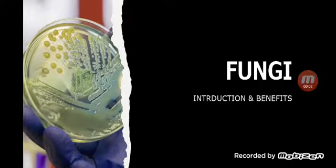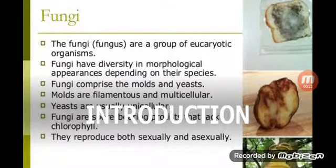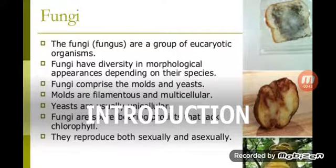Fungi belong to an old class of living forms, which is why they are known as primitive life forms. They are thallose multicellular organisms living in the form of colonies. Fungi are a group of eukaryotes, meaning they have a well-defined nucleus. Molds have more than one nucleus — the plural of nucleus is nuclei — so each mold cell contains two to three nuclei.